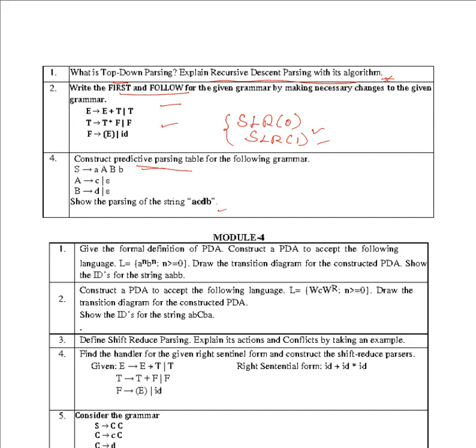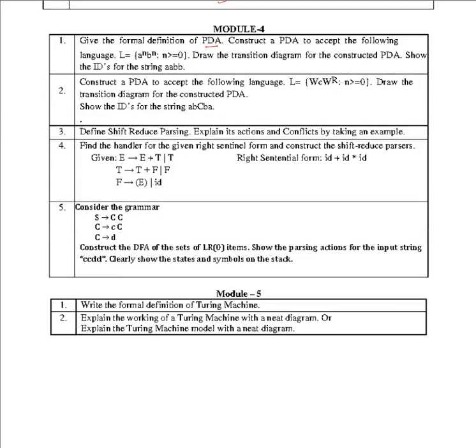Module 4: Give the formal definition of PDA and construct a PDA to accept the language a^n b^n where n is greater than or equal to 0. These are standard problems. Anything can be repeatedly asked. You may get 0^n 1^n - PDA pushdown automata, repeatedly asked questions. Or you may get WW reverse to design a PDA for these languages.